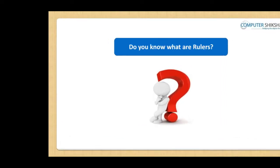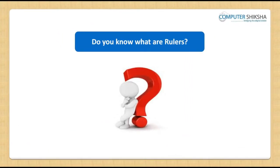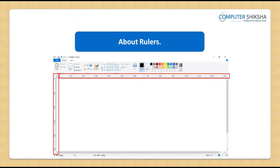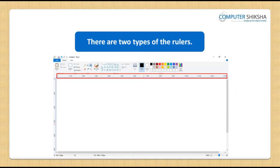Do you all know what rulers are? A ruler is like a scale which helps us in making drawings. These are of two types: horizontal and vertical.